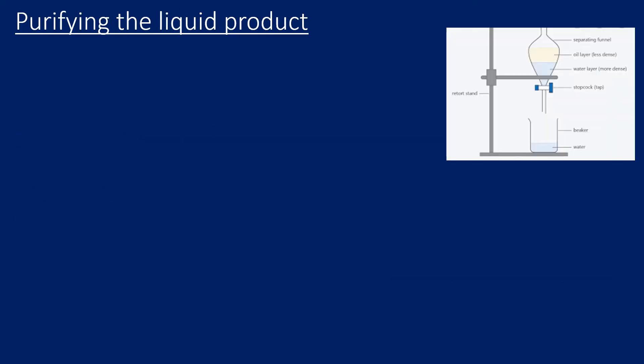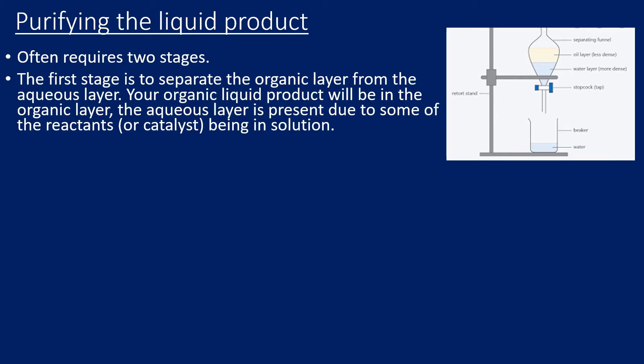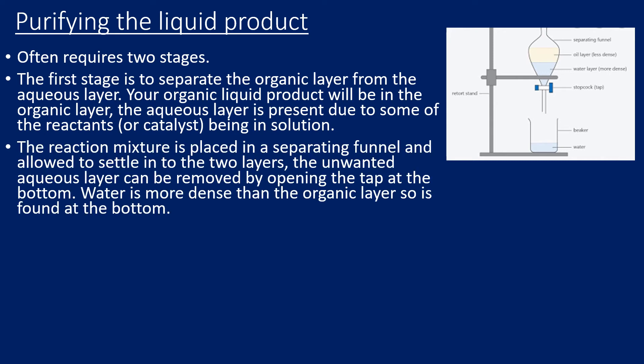Next, we need to purify our crude product, which is often done in two stages. First, we separate the organic layer from any aqueous layer, since water is commonly involved in the reaction, usually as a solvent. We use a separating funnel and allow the two layers to settle. The organic layer will always be on top and the water layer on the bottom. We open the stopcock to allow the water layer to flow through, then close it, leaving the organic layer behind.